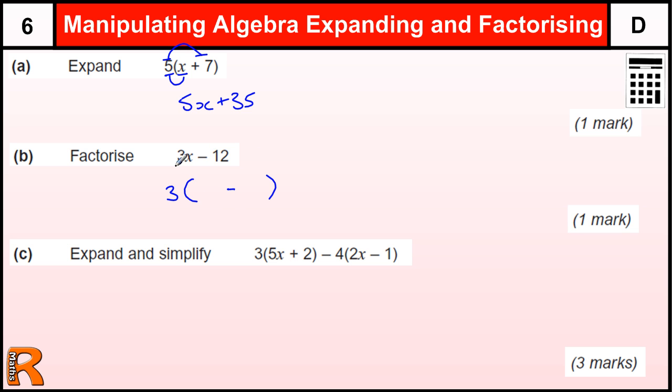What do I times 3 by to get 3x? Well that's x. What do I times 3 by to get 12? Well that's 4. So 3 lots of x is 3x, 3 lots of minus 4 is minus 12. Again, you have to get it perfectly right for 1 mark.